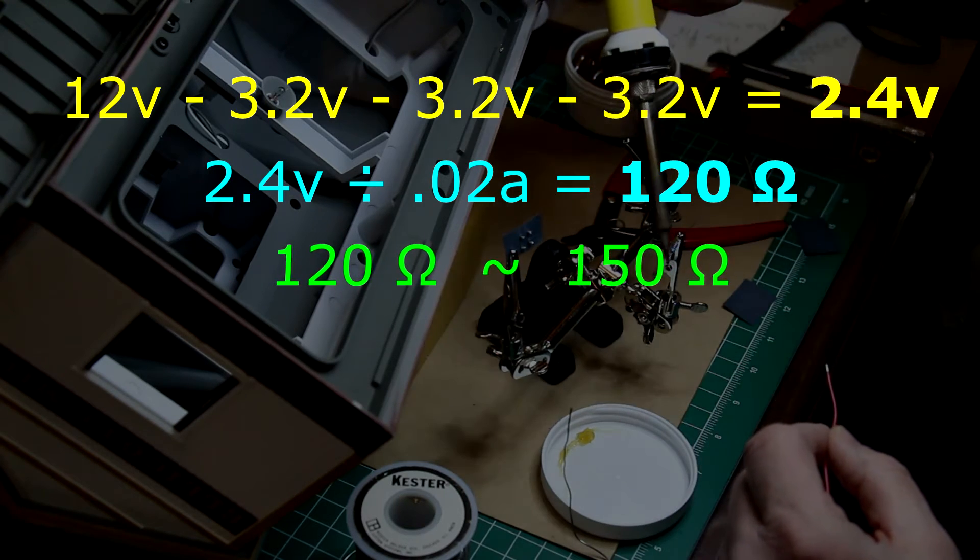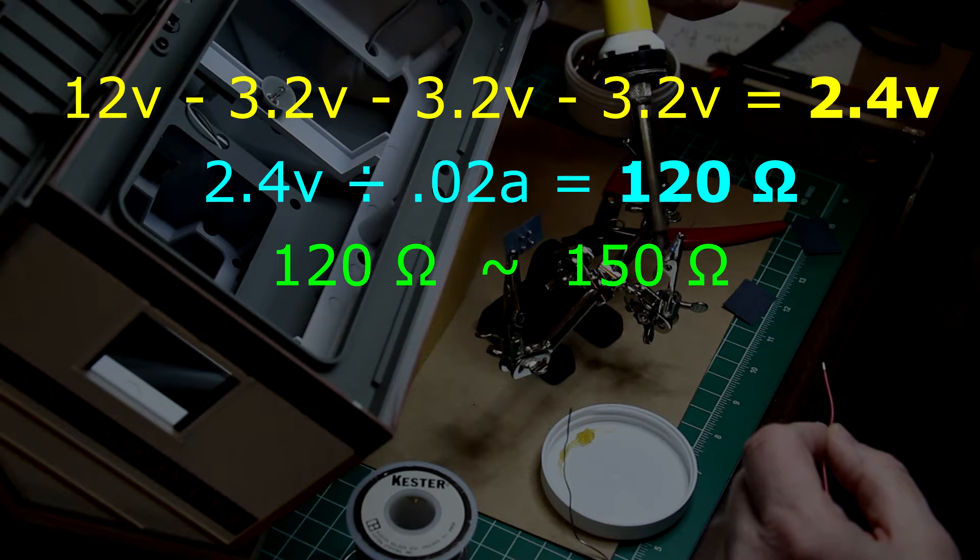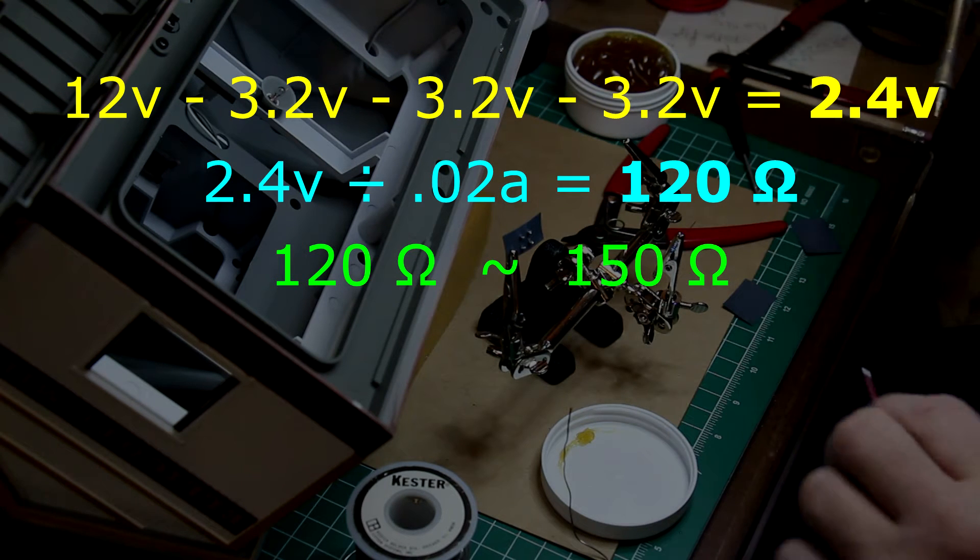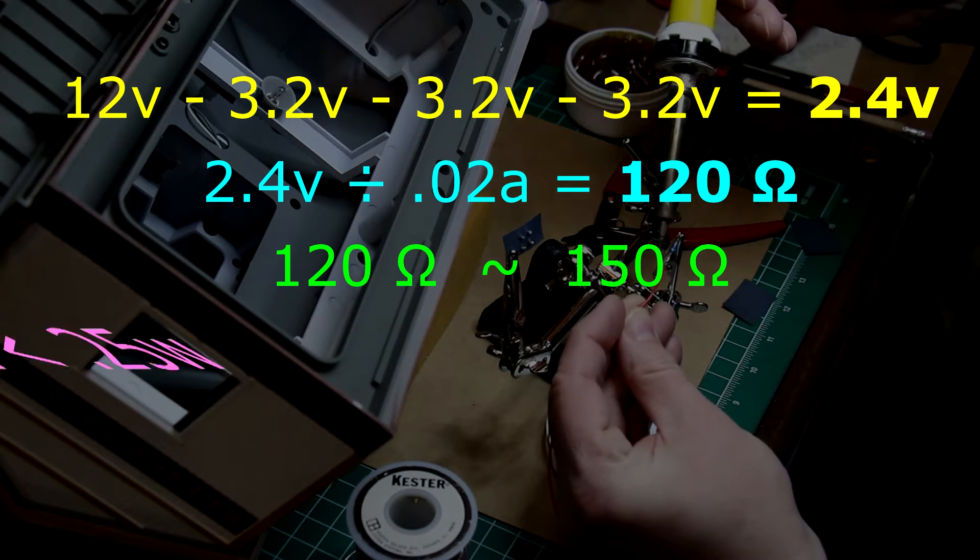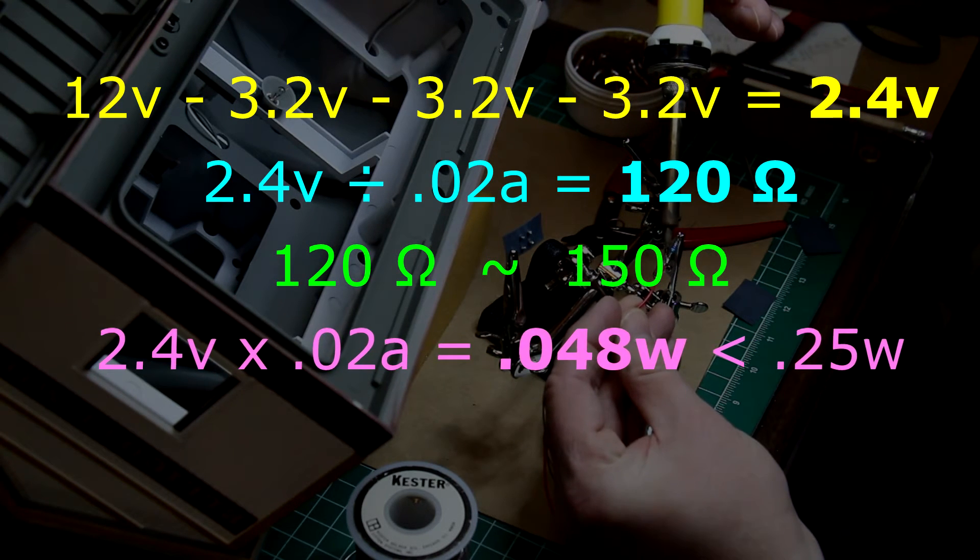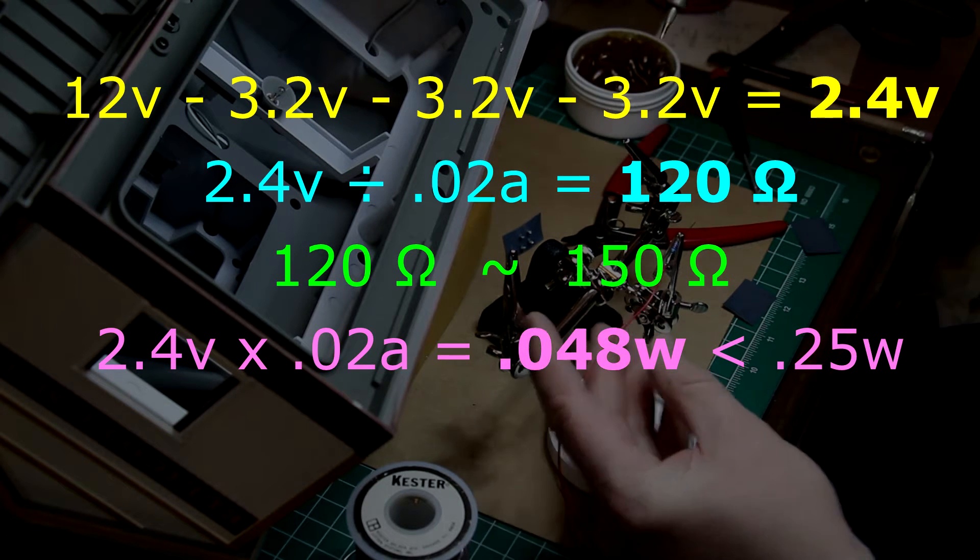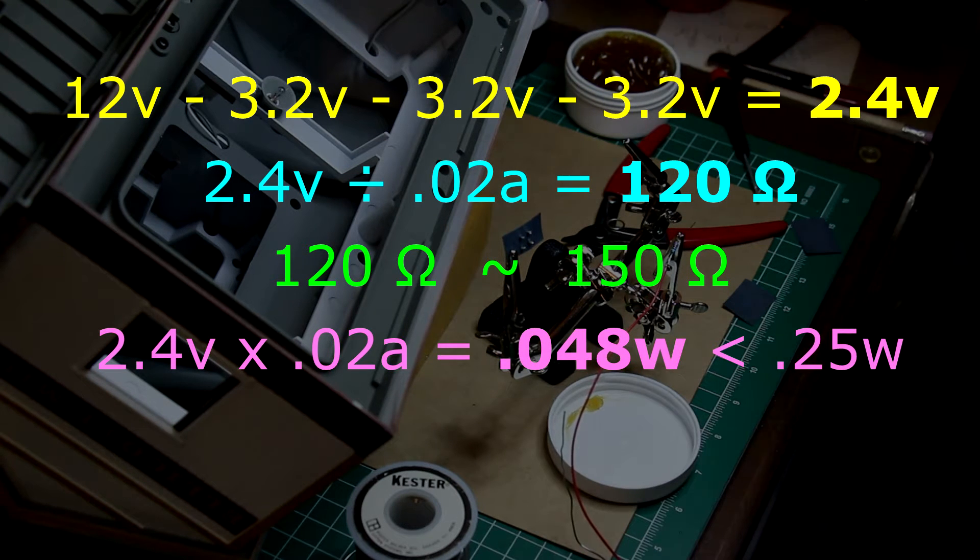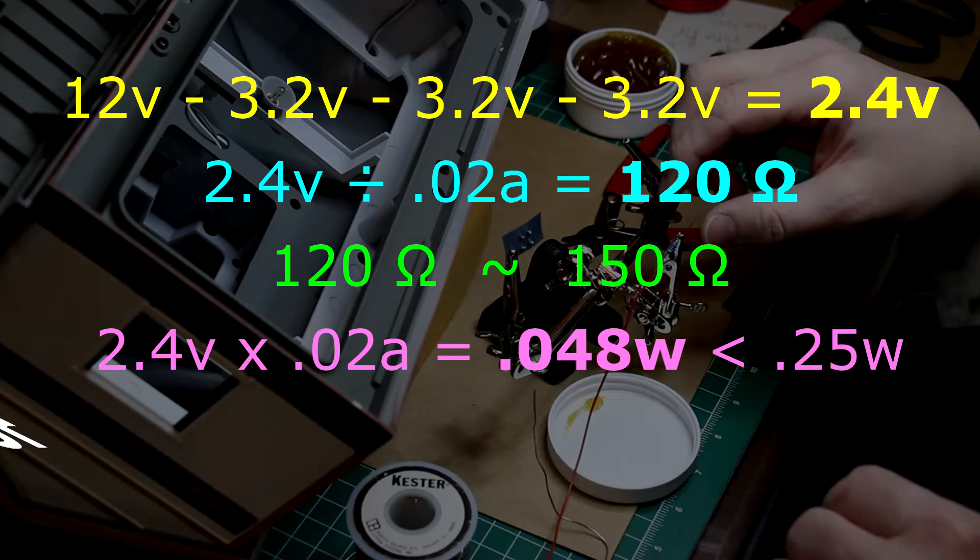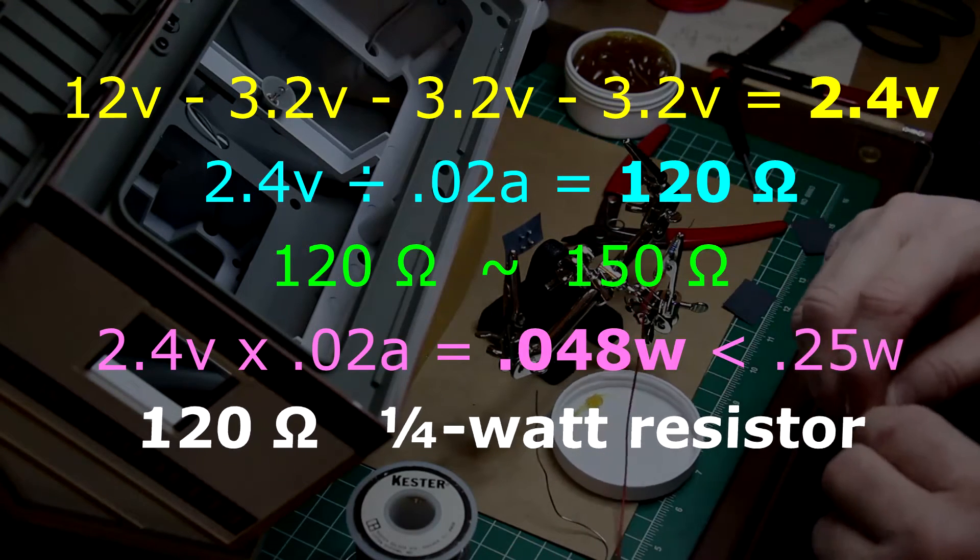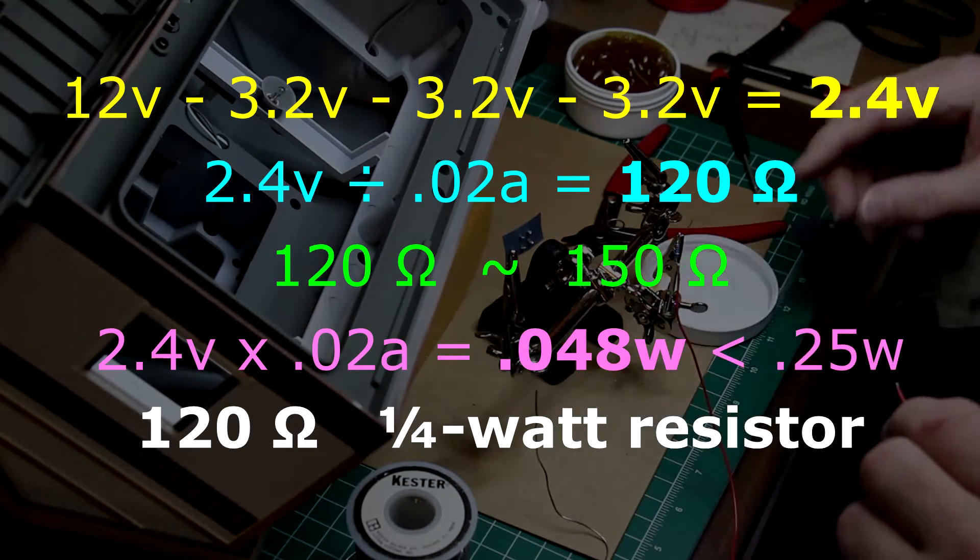Resistors don't come in every value so if you get in a situation where you don't have the exact one based on your calculation, use the next higher value. That 2.4 volts from the first line times 0.02 amps or 20 milliamps is 0.048 watts which is less than a quarter watt or 0.25 watts. So in conclusion, a 120 ohm quarter watt resistor is appropriate in this circuit.